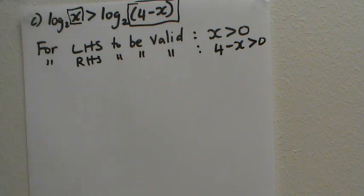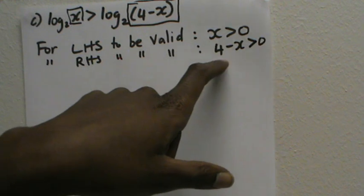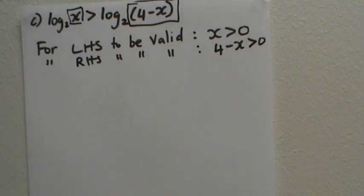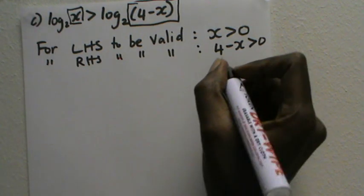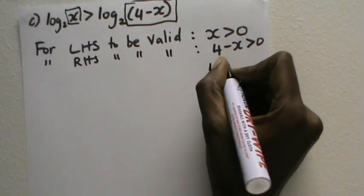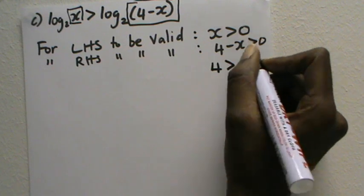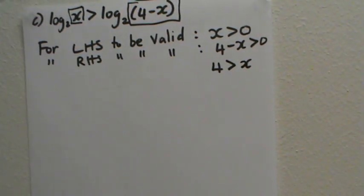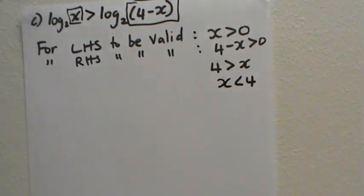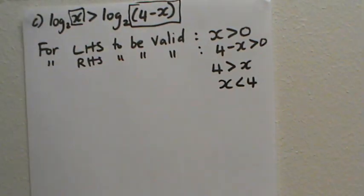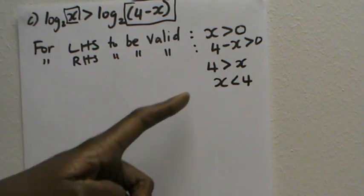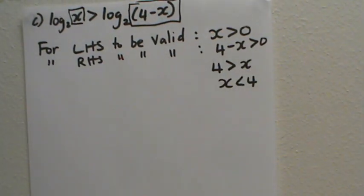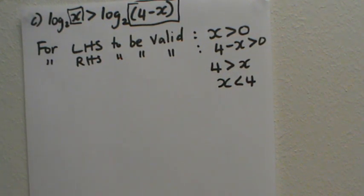From x greater than zero, that condition is straightforward. For four minus x greater than zero, I need to make x the subject. Taking x to the other side gives four greater than x, which means x is less than four. So these two conditions are: x greater than zero, and x less than four. That is the first requirement — both logarithms must be defined.